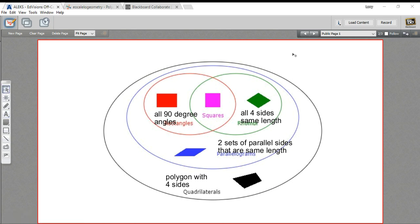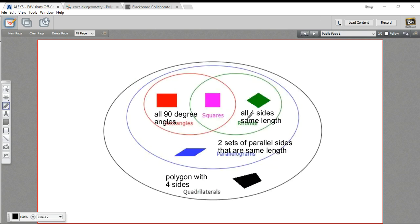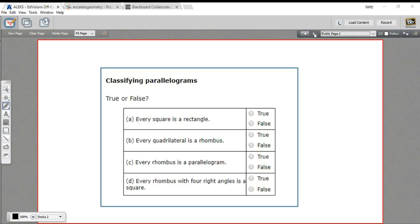All right, so let's look at some problems now in classifying quadrilaterals and see if we can use this information. We've got just four true or false questions here. This one says every square is a rectangle. And if we go back to our diagram, here's a square. It's inside the rectangle circle. So yes, every square is a rectangle. A square is just a rectangle that has all its sides the same length.